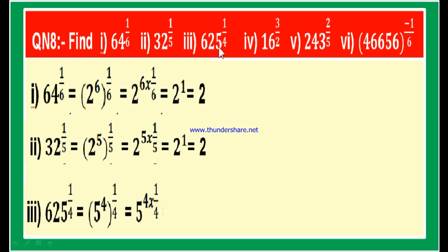Third part: 625 to the power of 1 by 4. Since 5 is in the units place, 625 is divisible by 5. So 625 is 5 into 125, and 125 is 5 into 25, and 25 is 5 into 5. Therefore 625 equals 5 power 4. So 5 power 4 whole power 1 by 4 equals 5 to the power of 4 into 1 by 4, which is 5 power 1, equal to 5.